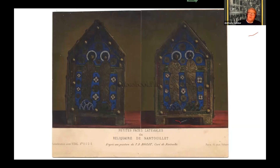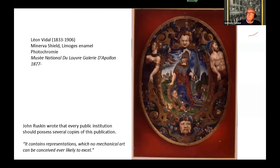Quickly onto some colour images: the photochromie process of Léon Vidal of Paris is basically a Woodbury type with over-printings of colour — up to 14 colours might be applied. A series was produced of the Musée National du Louvre, the Galerie d'Apollon. Interestingly, John Ruskin, the great art critic, wrote that every public institution should possess several copies of this publication, stating: 'It contains representations which no mechanical art can be conceived ever likely to excel.'